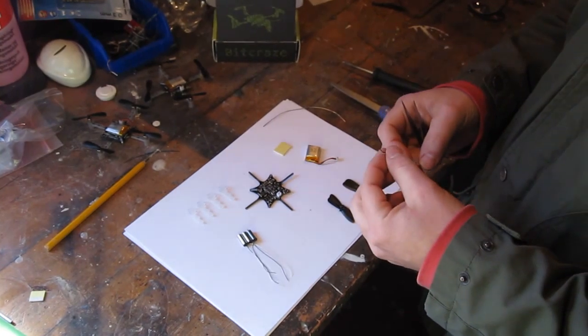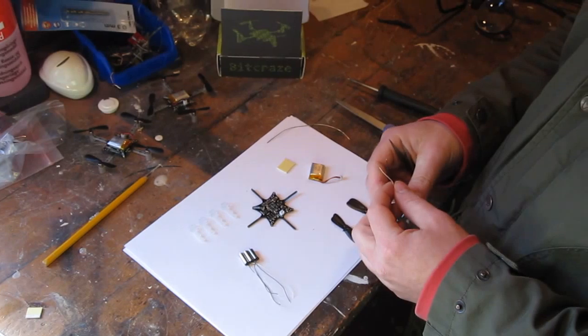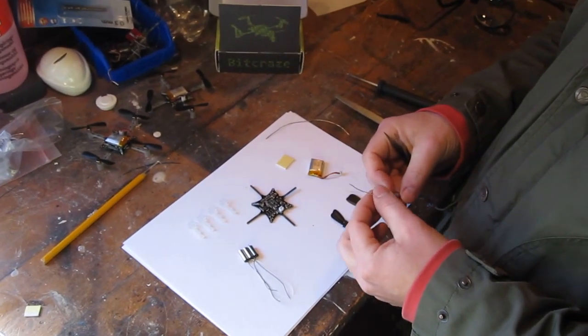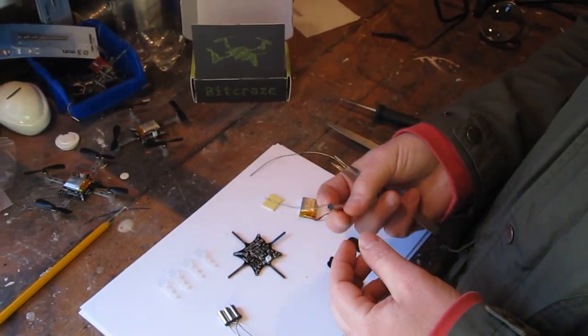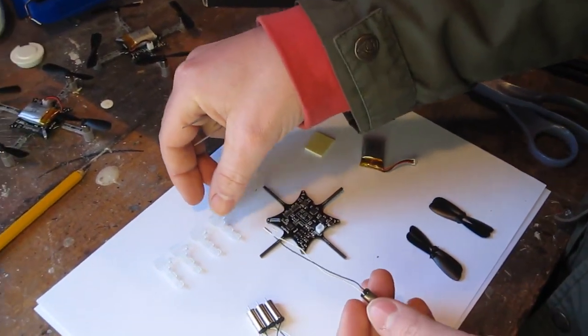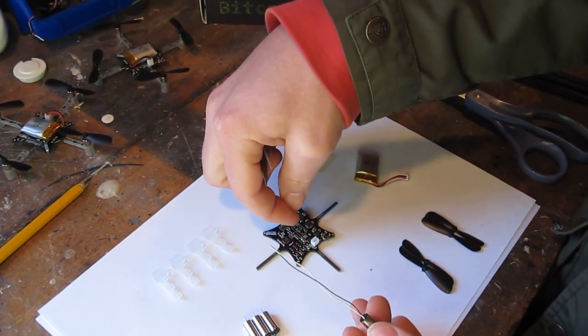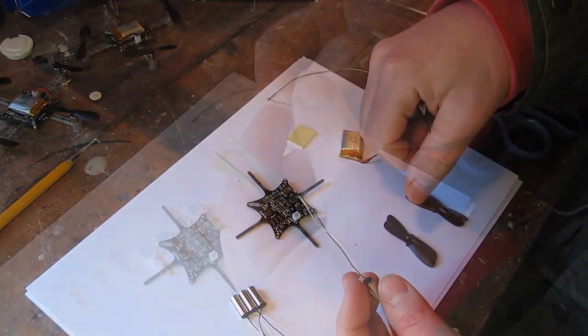You can assemble the Crazyflie in a lot of different ways, but we are going to show the way that works good for us. So what we are going to do is first we take the motors, we twist the wires, insert them into the motor mounts and then put the motor mounts on the Crazyflie and then solder the wires.